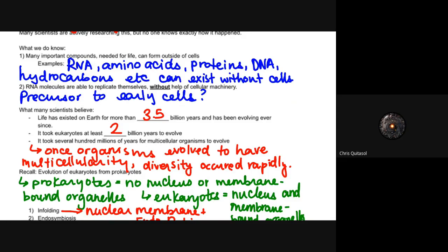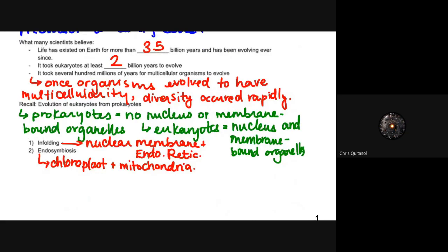Many scientists believe that life has existed on Earth for more than 3.5 billion years and counting, and has been evolving ever since. It took eukaryotes at least 2 billion years to evolve during that 3.5 billion years, and it took several hundred millions of years for multicellular organisms like us to evolve. Once organisms evolved to have multicellularity, diversity occurred rapidly. That multicellular component allowed for so many different niches within the environment to be filled.